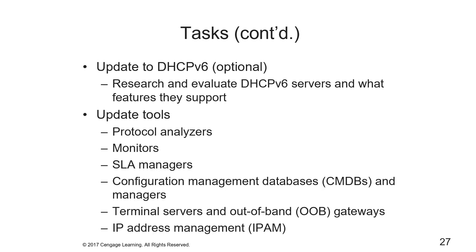Updating to DHCPv6 is optional, since devices can auto-configure. But if you implement DHCPv6 to get around the limitations of auto-configuration, planning will be similar to DNS — research and evaluate DHCPv6 servers and their supported features. Going live with a new DHCPv6 server takes finesse, since the new server won't know what IP addresses have already been leased, which can cause conflicts. The usual approach is to reduce the DHCPv6 lease time to about an hour before migration, so that during a two- to three-hour change window all clients will have requested new leases.